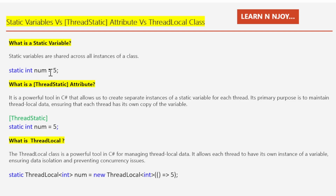The syntax of a static variable is simple. We first declare a simple variable — for example, 'int num' — and before that we add the static keyword, making it 'static int num'. I have initialized it with the value of 5. That's how we define a static variable and assign a value to it. Understanding how static variables behave in multi-threaded environments is crucial for writing robust and reliable code.